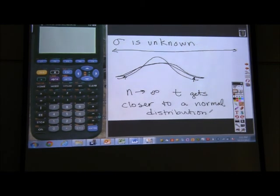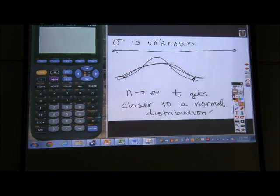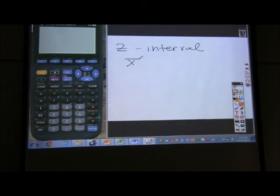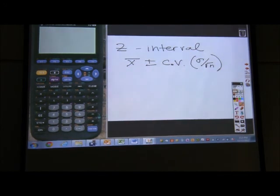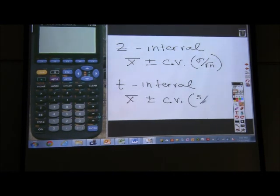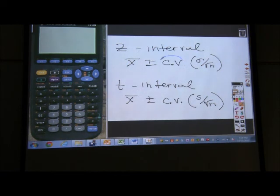To find t confidence intervals, you're going to need to find critical values, t critical values. So it's the same formula that we use for z confidence intervals. So a z confidence interval has this formula, the mean plus or minus your critical value times your sampling error. So here are the differences. This critical value times your sampling error. This critical value comes from a normal curve.